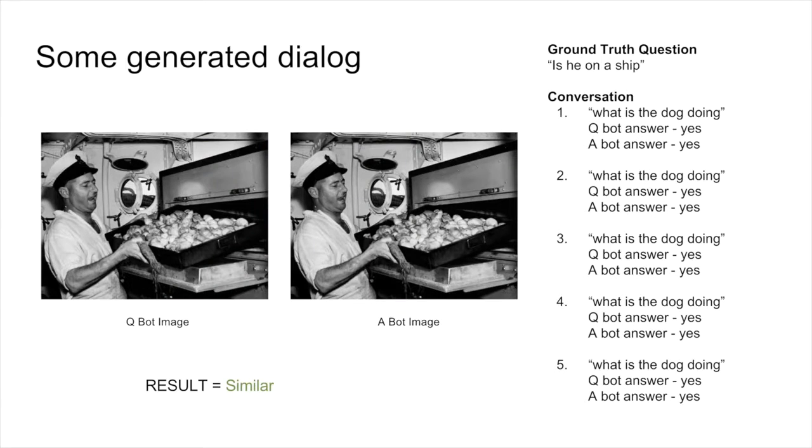This is an example of the Qbot getting it absolutely wrong. The Abots cannot see dogs in the image and go with the safe yes answer.